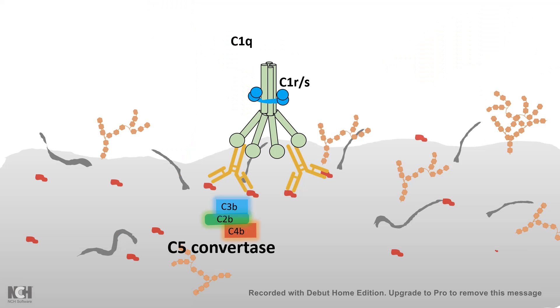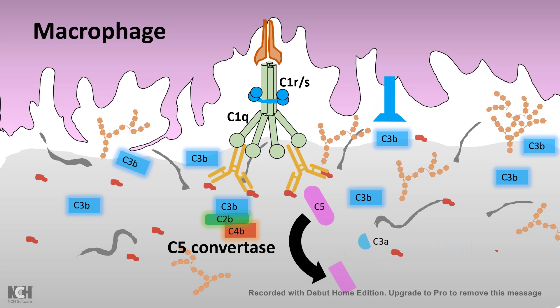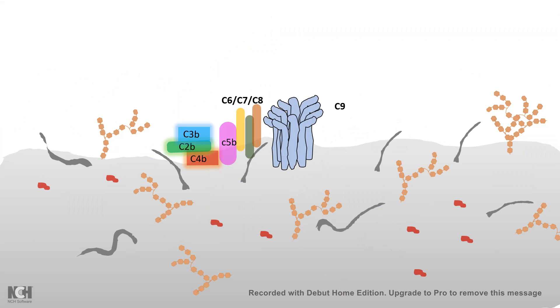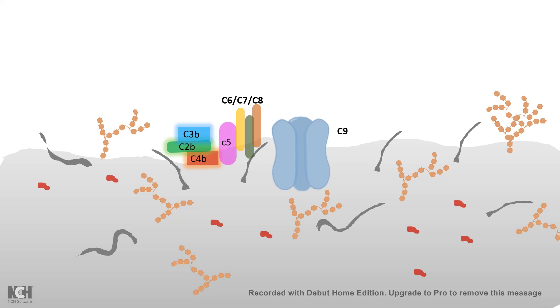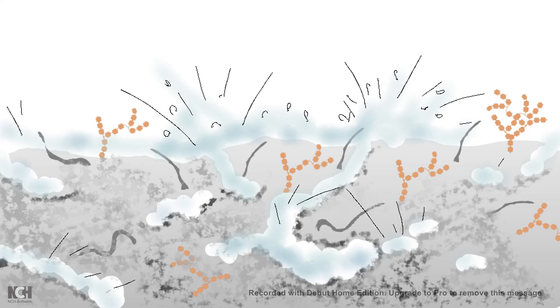Complement fixation can itself damage the bacteria. Complexes such as C3B attract macrophages, which have C3B receptors, helping direct the macrophage toward the bacteria to engulf it. Additionally, a cascade of complement proteins creates a membrane attack complex, which leads to osmotic imbalance and thereby lysis of the bacteria — killing it.